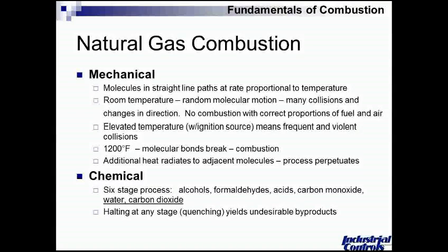In a chemical sense, occurring pretty much concurrently, there are six distinct steps in the natural gas combustion process: primary and secondary alcohols, formaldehyde, acid, and carbon monoxide. When we allow this story to play out to completion without inhibiting it at any step, we will end up with water, carbon dioxide, visible light, and heat. Ultimately, it's generally the heat that we want — the other elements come along as part of this chemical reaction.